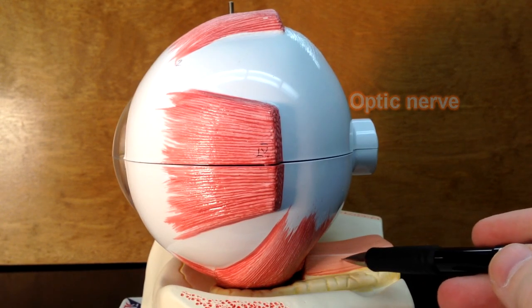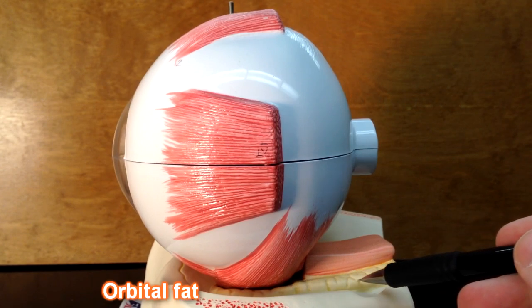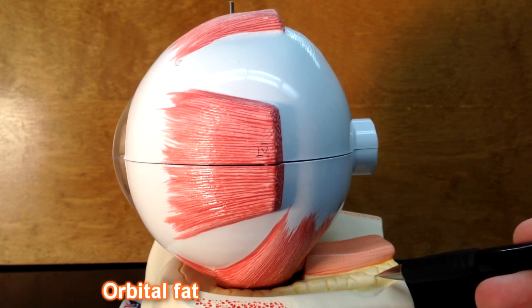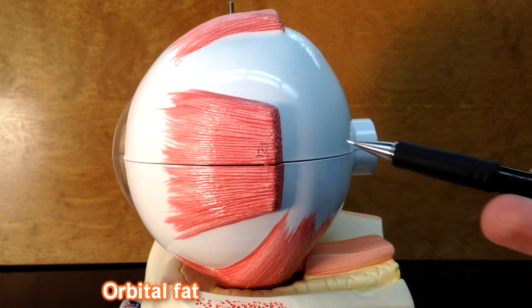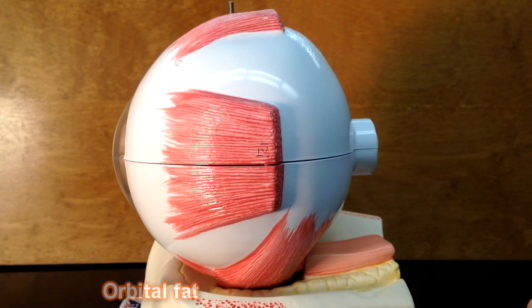Underneath the inferior rectus we see this yellow stuff. This is fat. There's going to be fat padding inside the orbit to protect the eye.